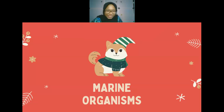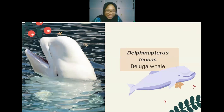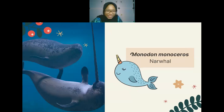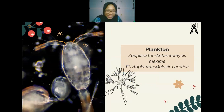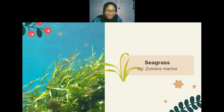Marine organisms found in the polar regions include: polar bear (Ursus maritimus), beluga whale (Delphinapterus leucas), walrus (Odobenus rosmarus), narwhal (Monodon monoceros), ring seal (Pusa hispida). For plankton: zooplankton Artemia maxima and phytoplankton Melosira arctica. Seaweed: Agarum clathrum. Seagrass: Zostera marina.